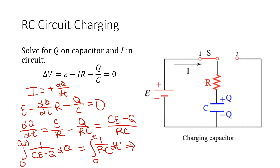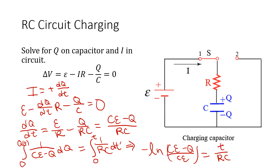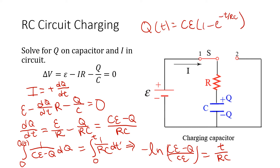Integrating, we get: negative ln(Cε minus q), evaluated from 0 to q, equals t/RC. The negative comes from the negative q in the denominator. The lower bound gives ln(Cε). Doing some algebra — moving the negative to the other side and taking the exponential — we eventually get q as a function of time: q(t) = Cε · (1 minus e^(−t/RC)).